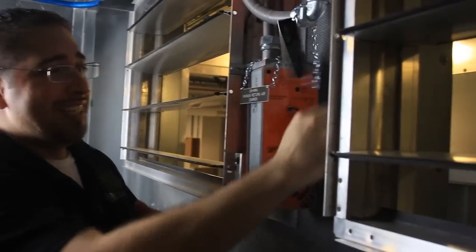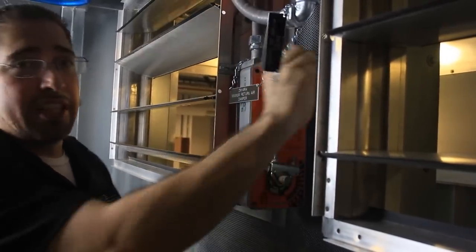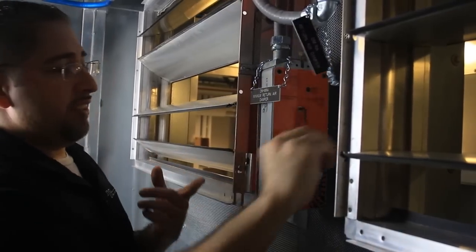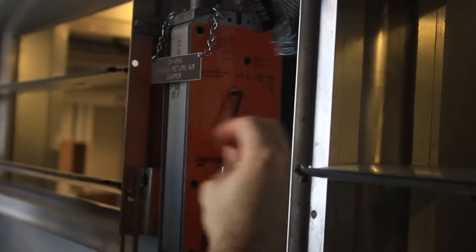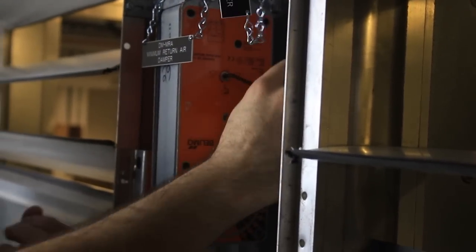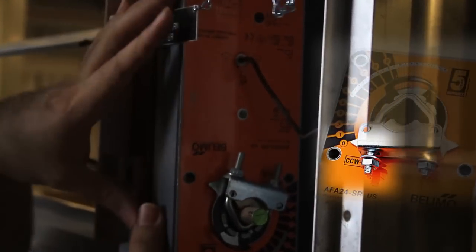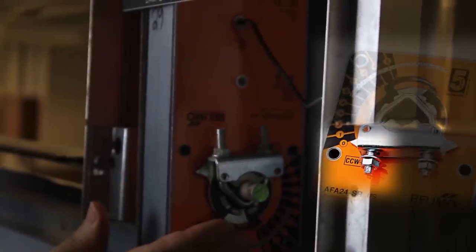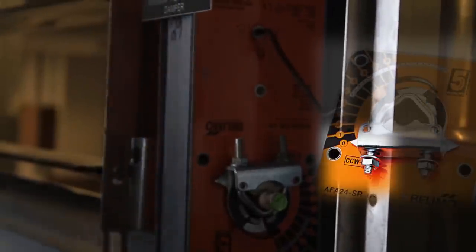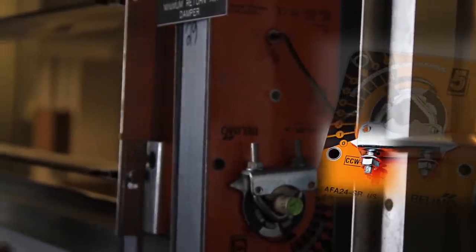Some other things with the spring return is it depends on which way you mount this that you want the spring return. So in this case, I'm actually driving the shaft of this damper, and as you're looking at it, it's going clockwise. If you wanted to rotate the damper counterclockwise, all you have to do is mount this actuator, flip it around, and then stick it right back where it's mounted now. Then at that point, the spring return action would be spinning the shaft counterclockwise.